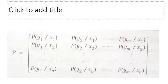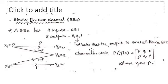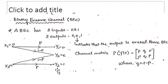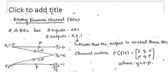So since we have two inputs and three outputs, the channel matrix is defined by: P(Y1|X1), P(Y2|X1), and P(Y3|X1), then P(Y1|X2), P(Y2|X2), and P(Y3|X2). P(Y1|X1) is P. P(Y2|X1) is 1 minus P, which we take as Q. P(Y3|X1) has no connection in the graph, so it is 0. P(Y2|X2) is 1 minus P, which is Q. P(Y3|X2) is P. So this is the channel matrix for the binary erasure channel.